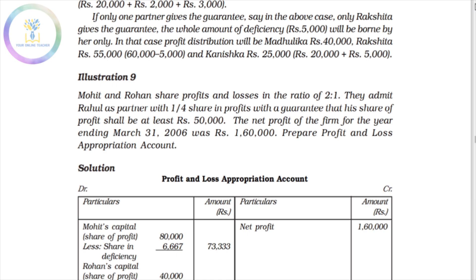Mohith and Rohan's old ratio is 2:1. The new partner Rahul is admitted with a 1/4 share of profit. There is a guarantee that Rahul's share of profit shall be at least 50,000. The total profit of the firm is 1,60,000.